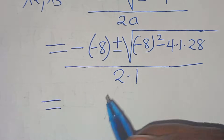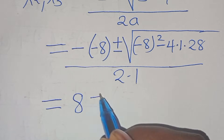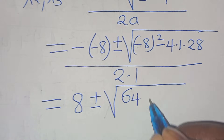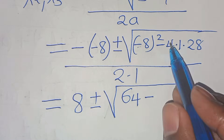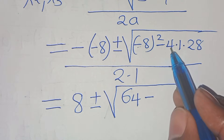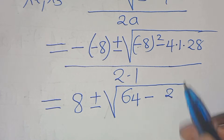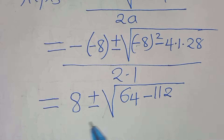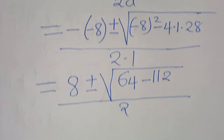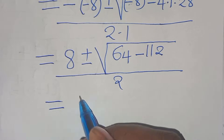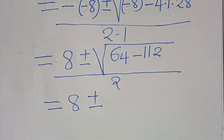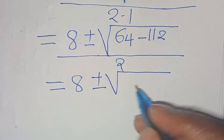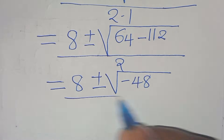This is the same as 8 plus or minus the square root of 64 minus 112, divided by 2. Now 4 times 28: 8 times 4 is 32, carry 3, then 4 times 2 is 8, plus 3 is 11, so this is 112. So we have 8 plus or minus the square root of 64 minus 112, which is minus 48, divided by 2.